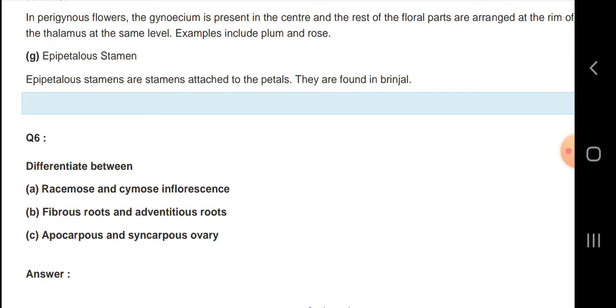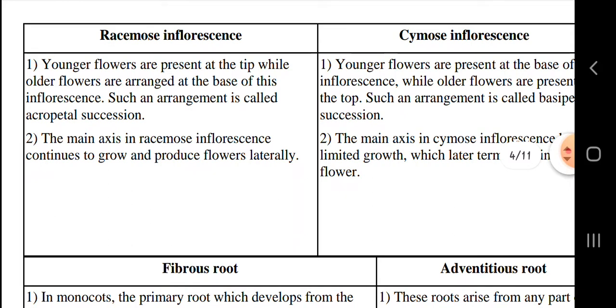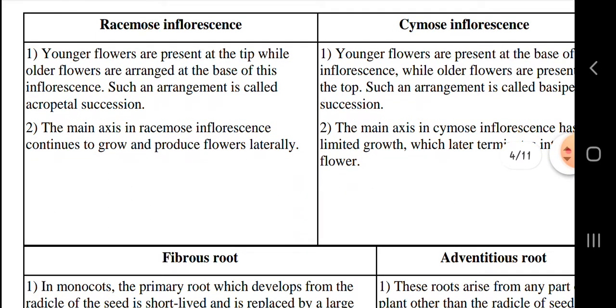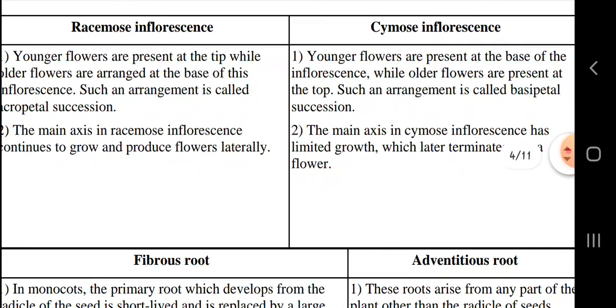The difference between racemose and cymose inflorescence, fibrous root and adventitious root, and apocarpous and syncarpous ovary. In racemose inflorescence, younger flowers are present at the tips while older flowers are arranged at the base. In cymose inflorescence, younger flowers are present at the base while older flowers are present at the top.